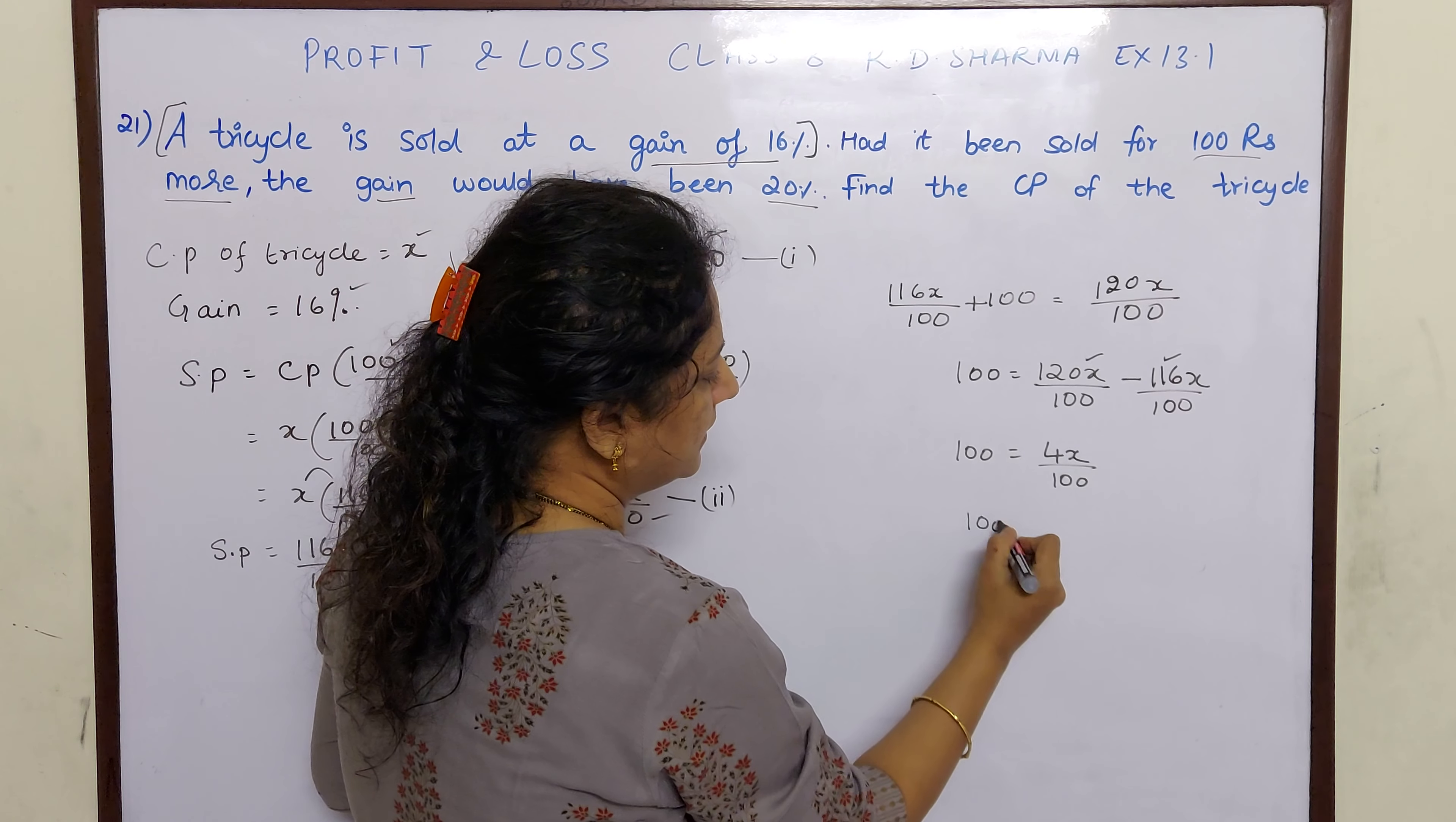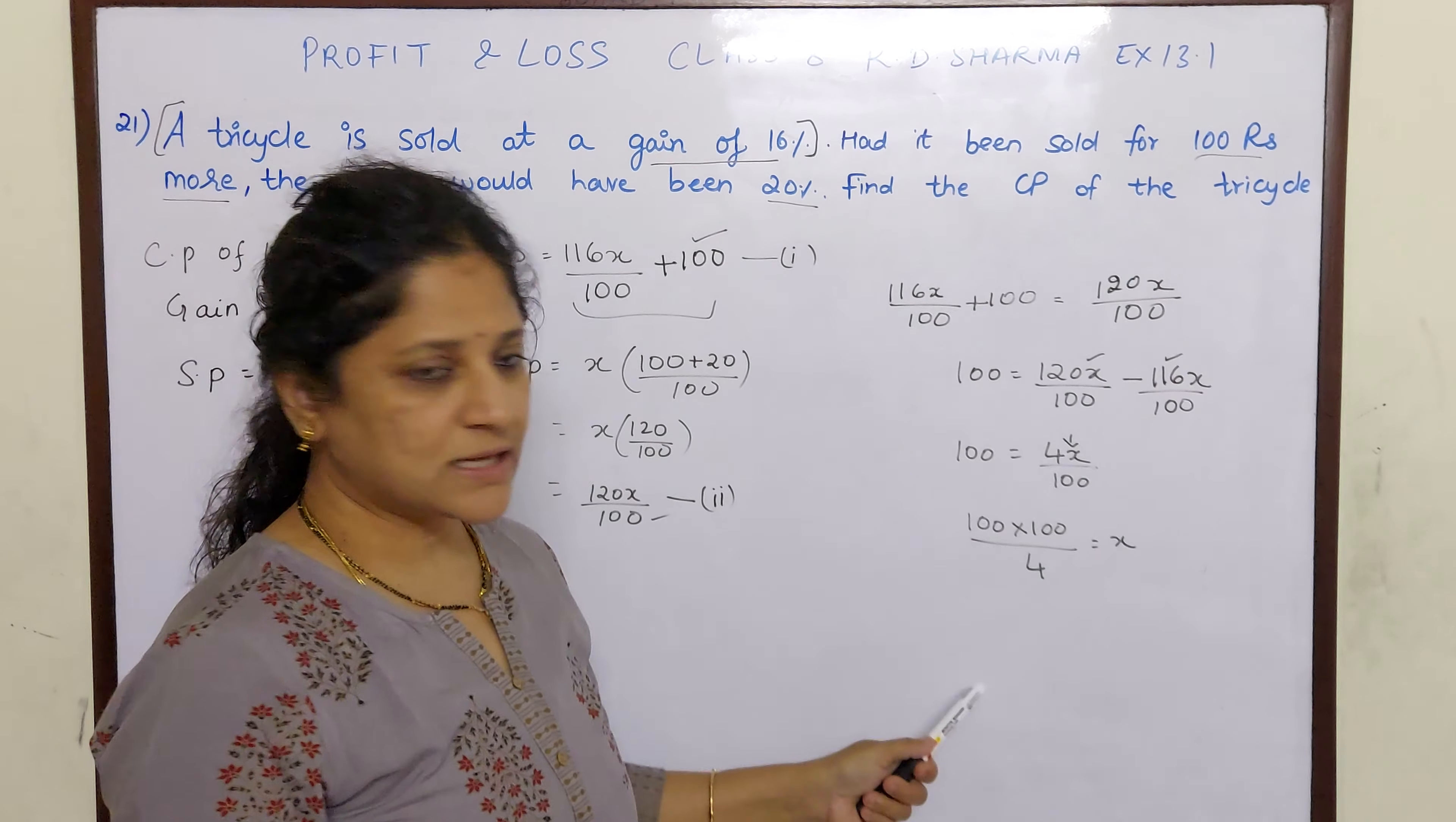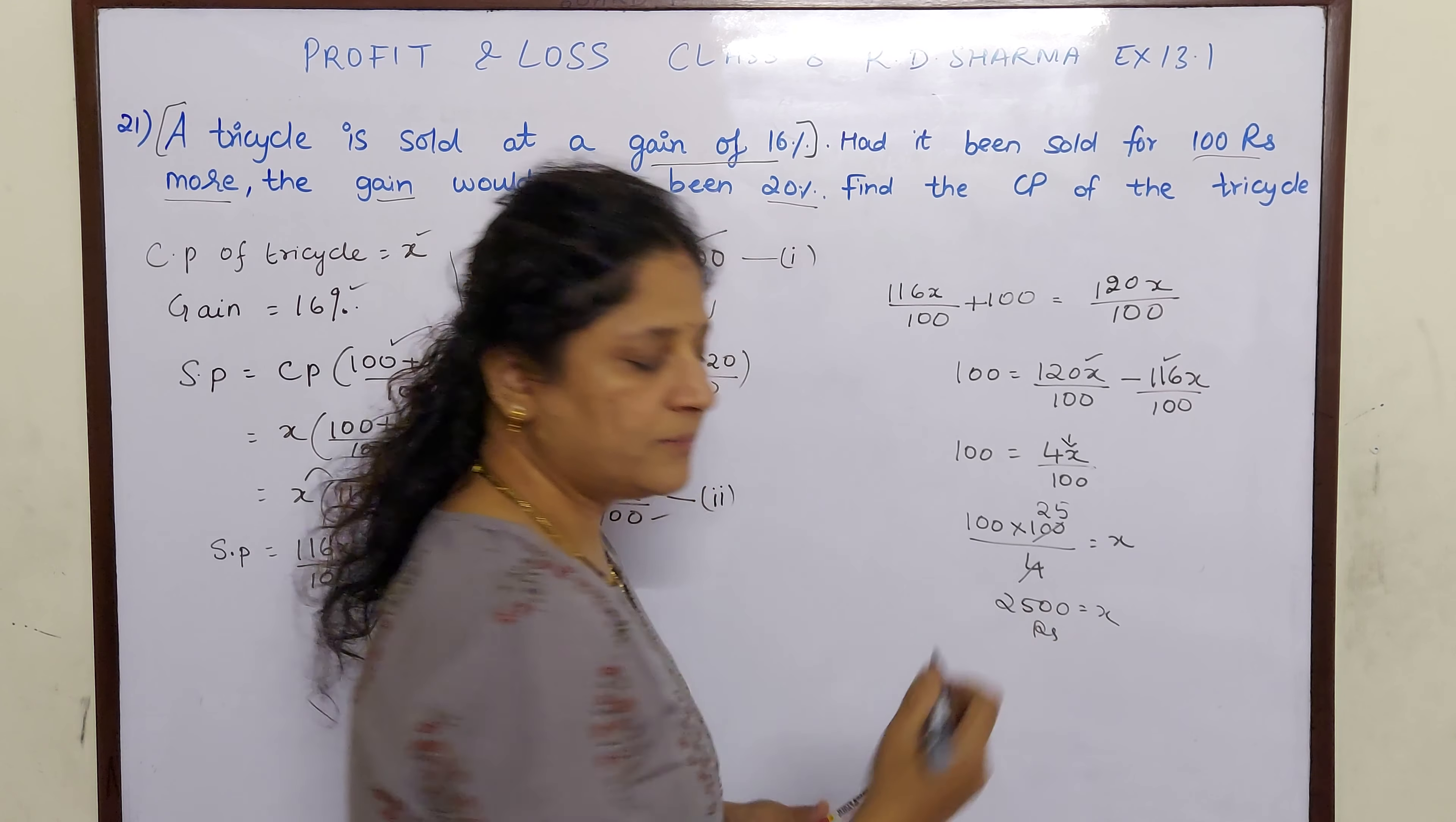So 100 into 100 divide by 4 is equal to X. Because this is multiplication, so if I keep X here and I transpose 4 by 100 this side, it becomes 100 by 4. 4 ones are 4, 4 twenty-fives are 100. 100 into 25 is 2500, the cost price of the tricycle.